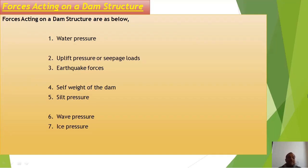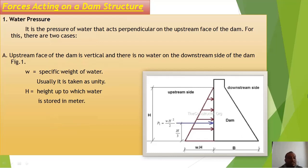Forces acting on the dam structure include: water pressure, uplift pressure or seepage load, earthquake forces, self-weight of the dam, silt pressure, wave pressure, and ice pressure. Water pressure acts perpendicular to the upstream face of the dam. Case A: upstream face vertical, no water on downstream side — the pressure P1 equals w × H squared divided by 2, where H is the height of water stored and w is the specific weight of water. Pressure acts triangularly, at H/3 from the bottom.